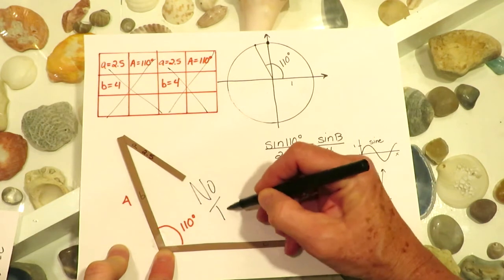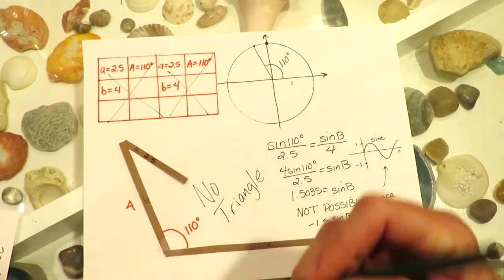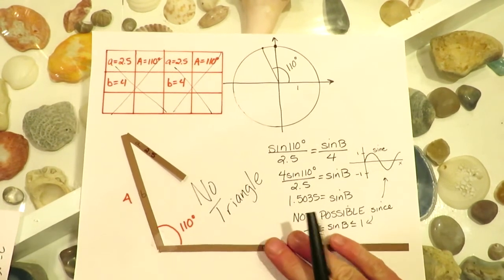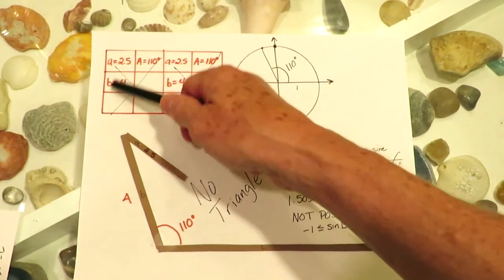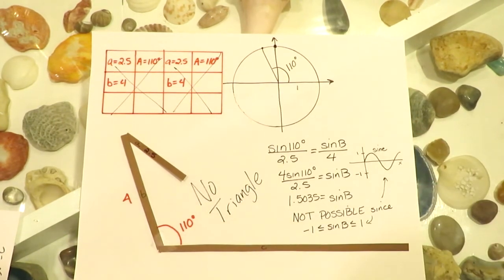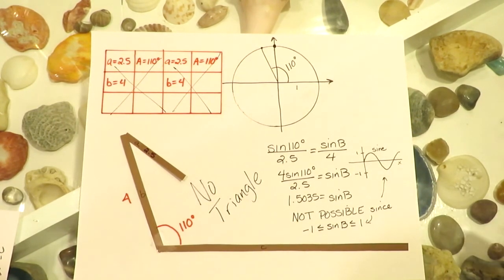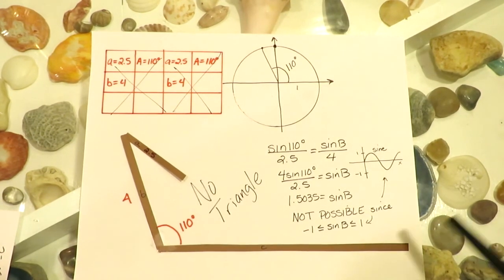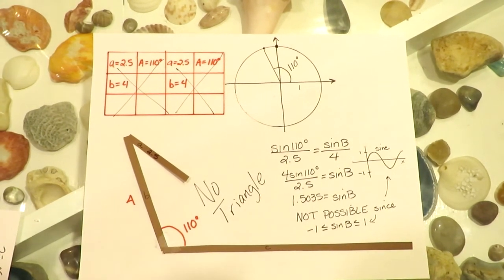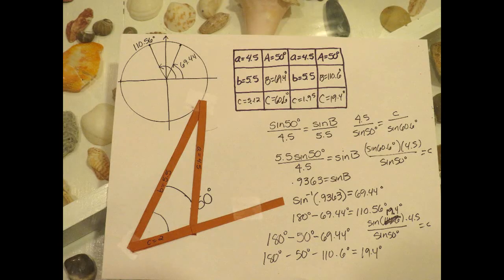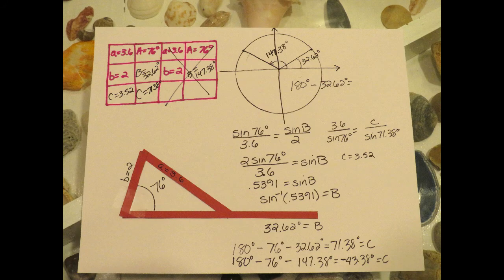My recommendation: just assume there are two triangles and make your chart. If there are two triangles, you're all set to fill everything in and find both. If there's only one, as you try to find the second, you'll figure out it can't exist. And if there's no triangle, it comes out right away — you'll notice immediately that no triangle is possible.